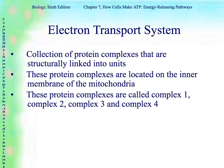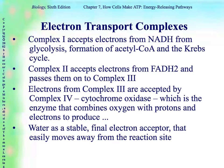These protein complexes are just called complex I, complex II, complex III, and complex IV. Complex I accepts electrons from NADH from glycolysis, the formation of acetyl coenzyme A, and the Krebs cycle. Complex II accepts electrons from FADH2 and passes them on to complex III. The electrons from complex III are accepted by complex IV, which is called cytochrome oxidase — an enzyme that combines oxygen with protons and electrons to produce water. Water is the stable, final electron acceptor that easily moves away from the reaction site.